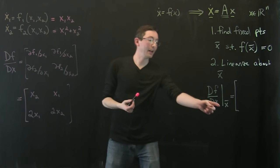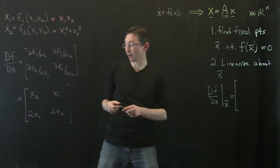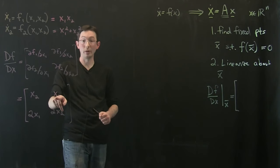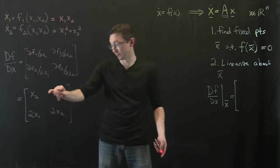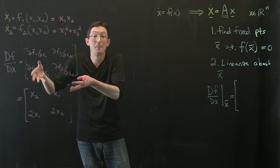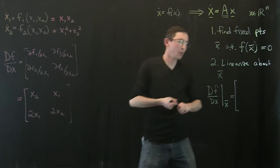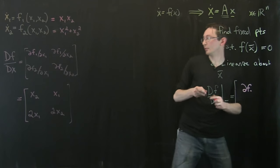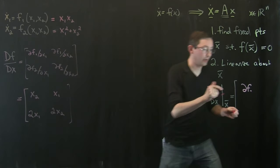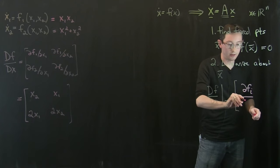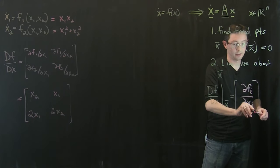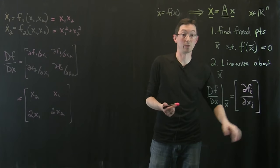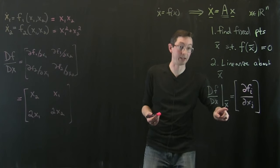If I evaluated this at my fixed point x-bar, I would just literally plug in the components x1 and x2 of my fixed point. I just plug in the numbers and this becomes an honest-to-goodness matrix. So this is a shorthand: partial f_i / partial x_j, evaluated at x-bar - just a matrix of partial derivatives evaluated at the fixed point.